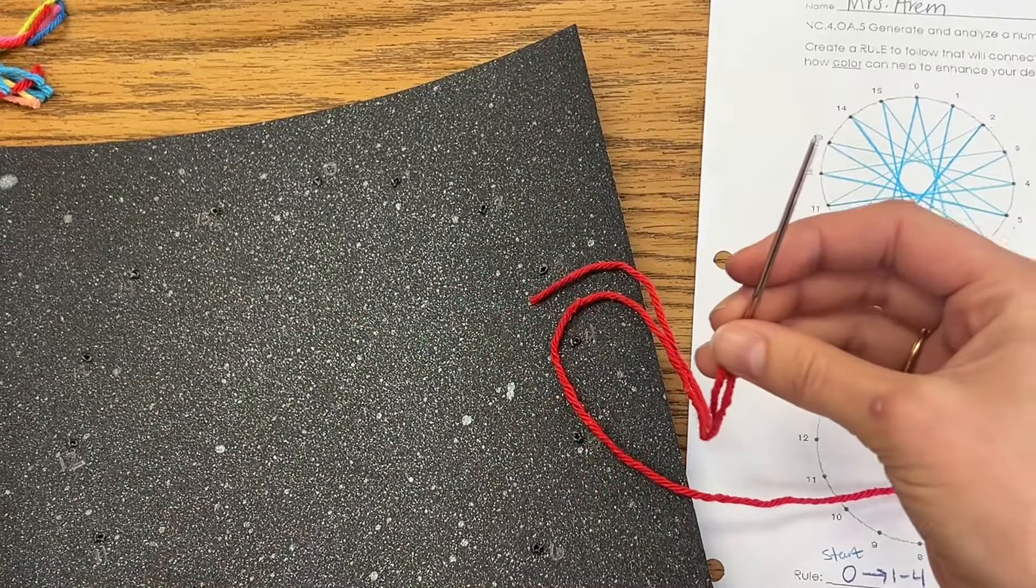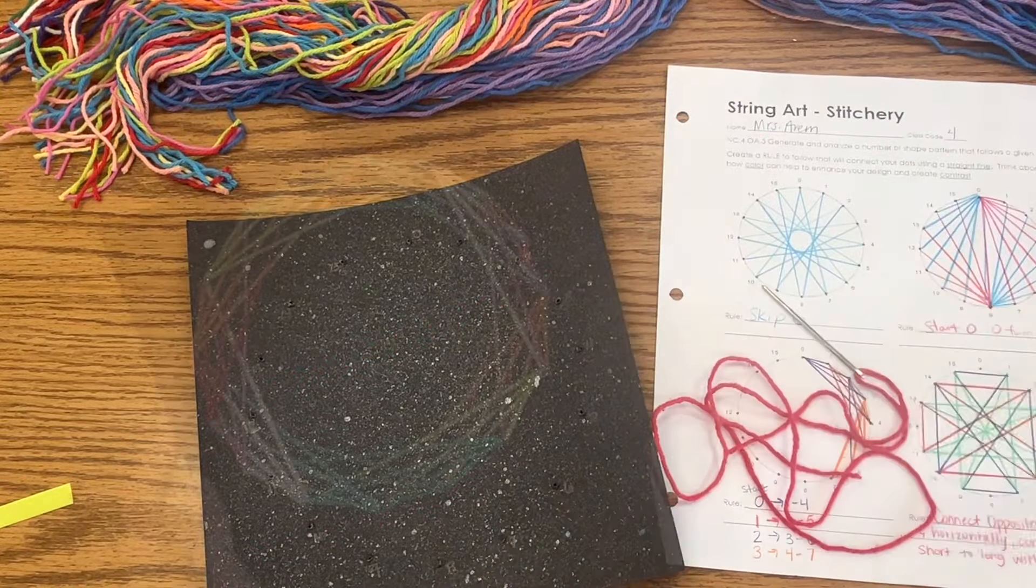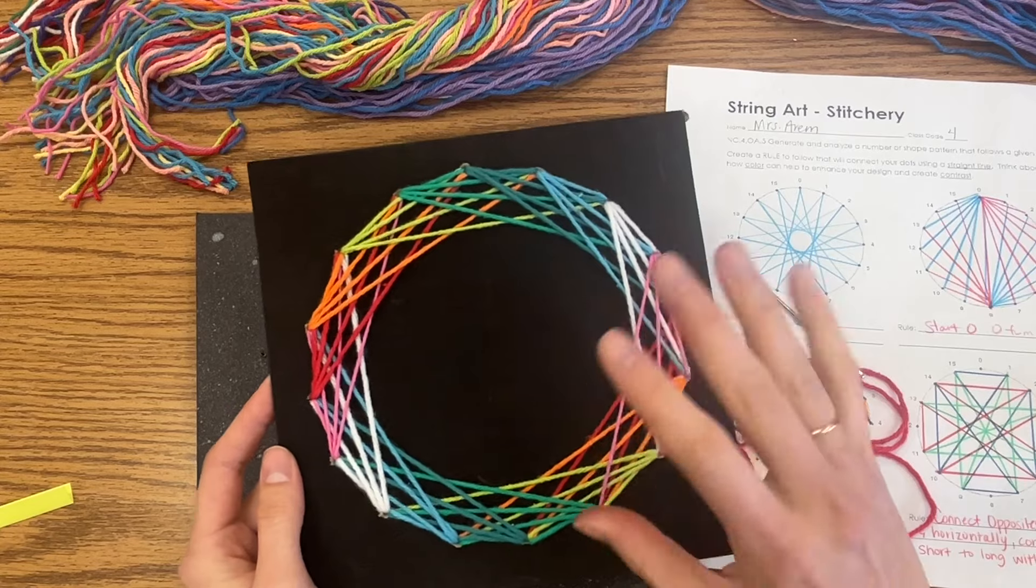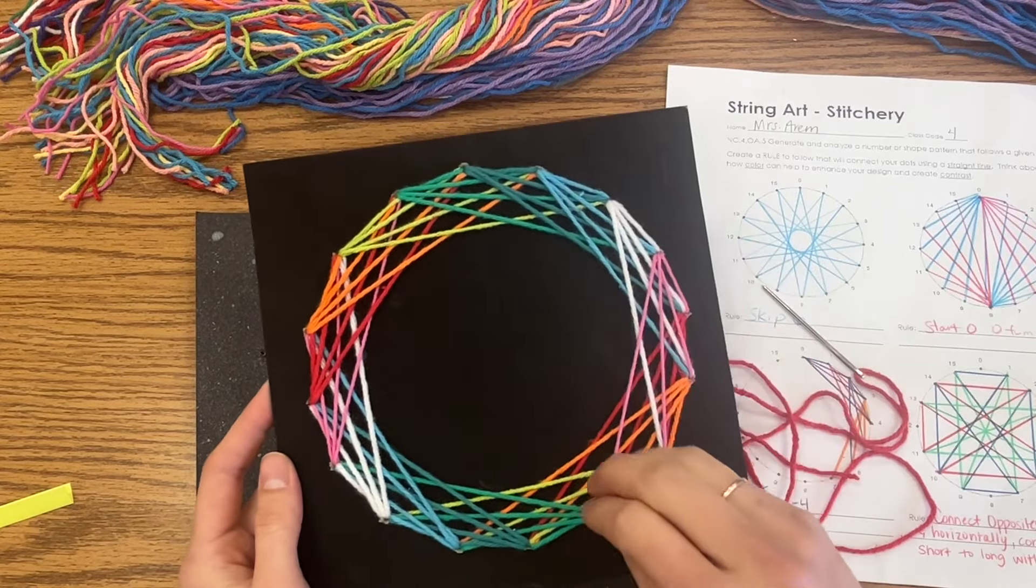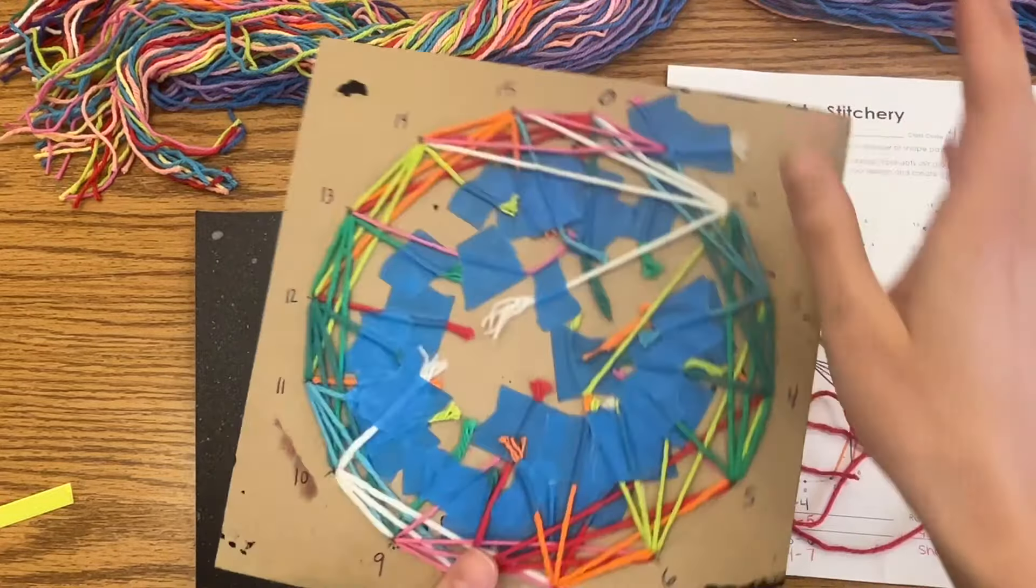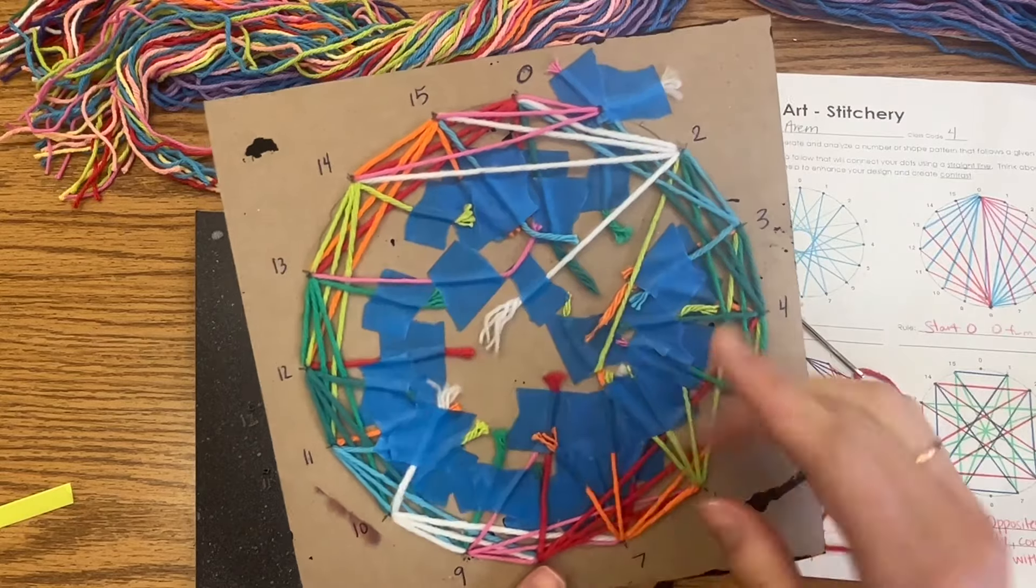Now we are ready to begin sewing. We're going to hopefully have some really amazing stitched string art at the end of this project. The front will be beautiful but the back will be the hot mess express. That is going to be where you're taping off all of your new strings.